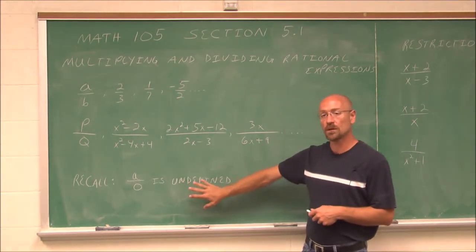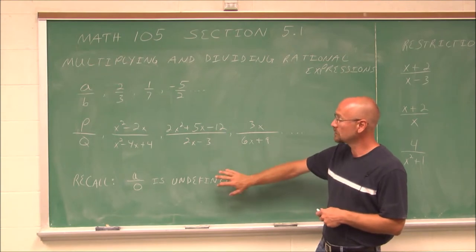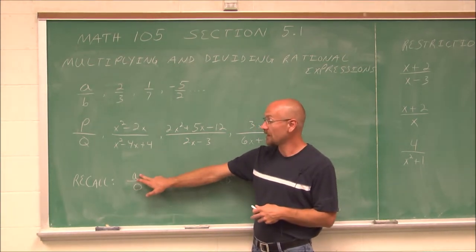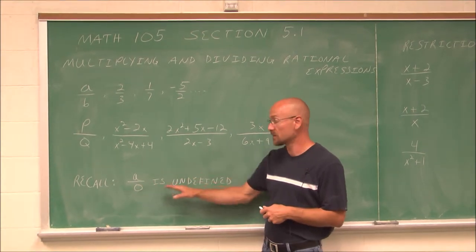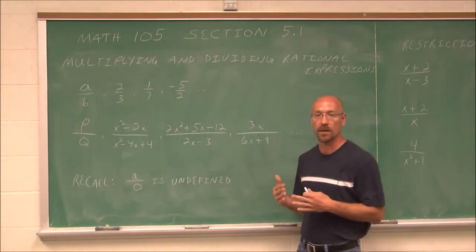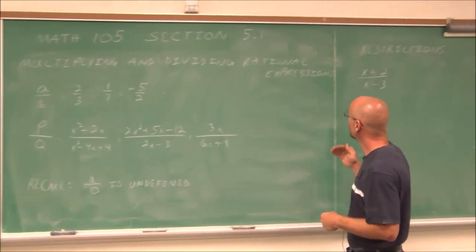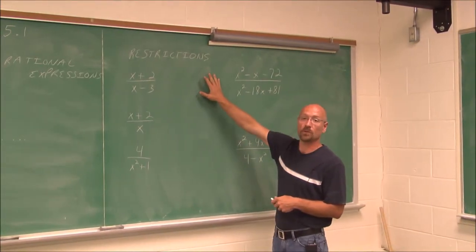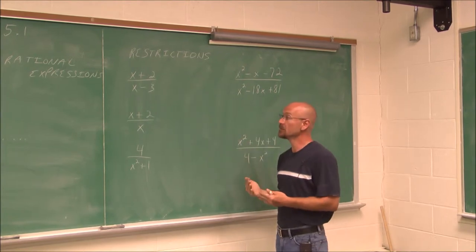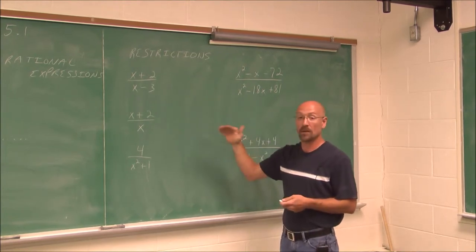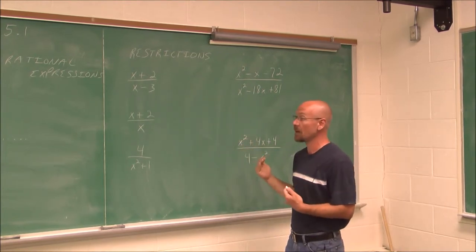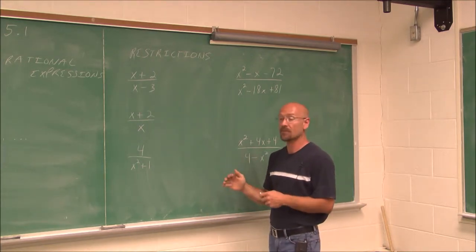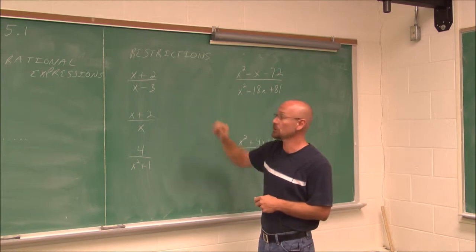One thing we have to recall when dealing with rational expressions is the law that any number divided by 0 is undefined — we can never divide by 0. So when it comes to rational expressions, we have to determine restrictions: what variable value might cause us to divide by 0? We'd have to eliminate that value — it is a restriction.